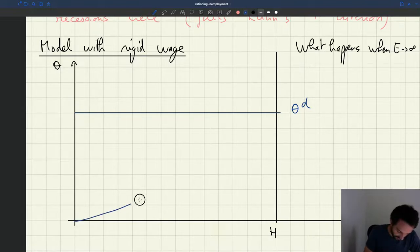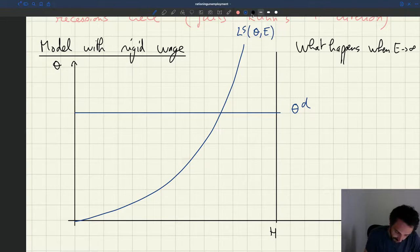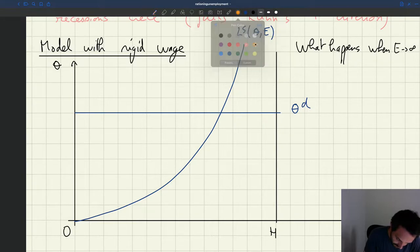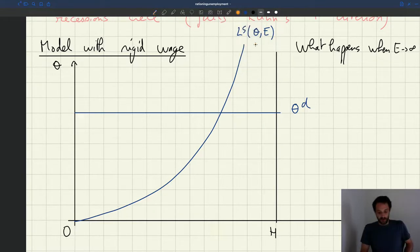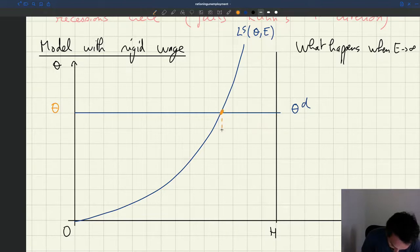So what happens when effort goes to infinity? We have to also look at the labor supply, which depends on tightness and also on effort here. That's just our labor market model, even with a model with rigid wage. Equilibrium tightness is given by the labor demand, it's here. Employment, we look at the intersection of the two curves and we get our employment here.